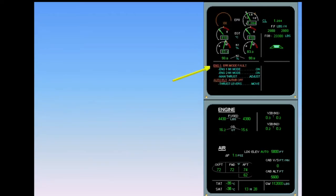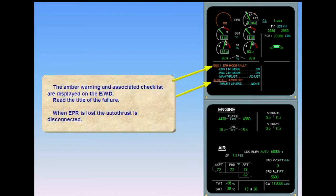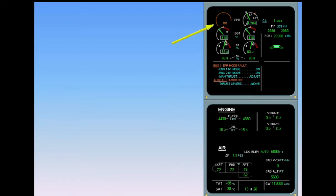The amber warning and associated checklists are displayed on the engine warning display. Read the title of the failure. When EEPER is lost, the auto thrust is disconnected. The EEPER indicator is amber and the value is crossed amber, showing that EEPER 1 mode is lost.